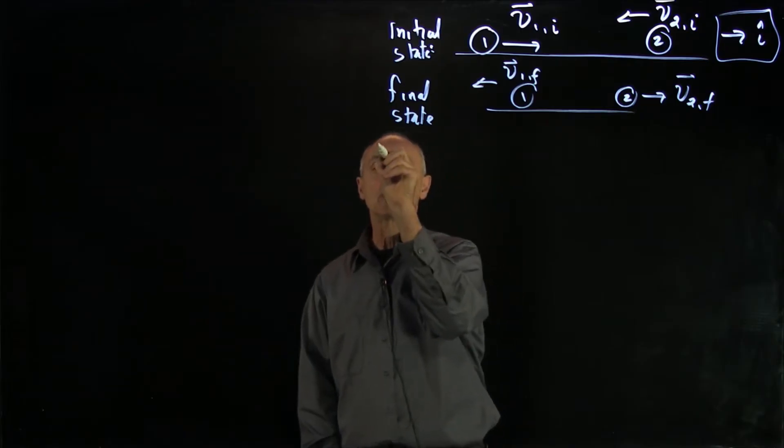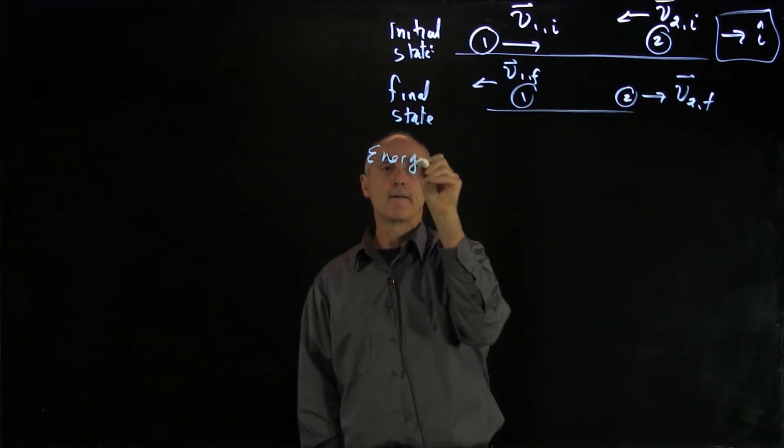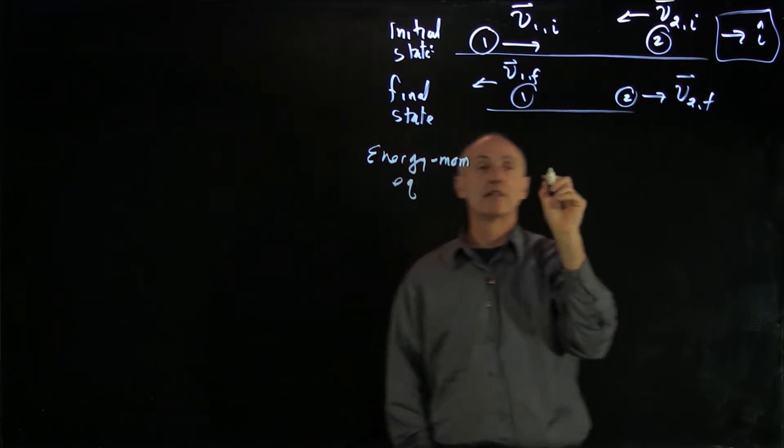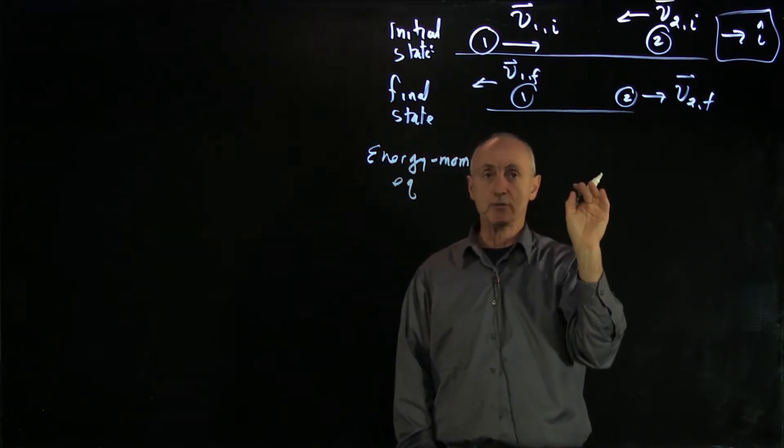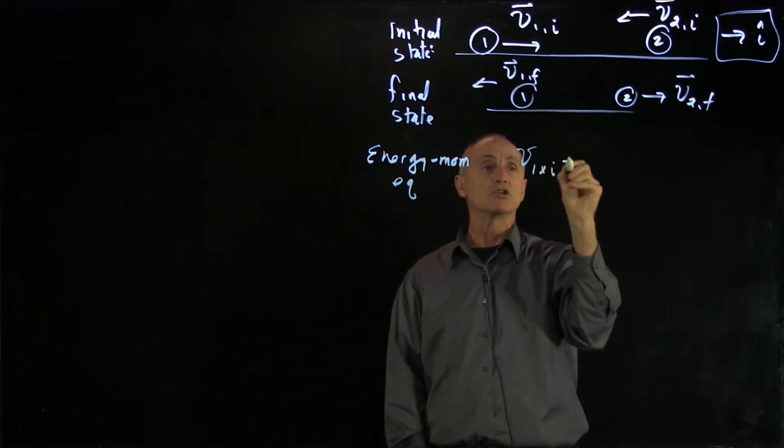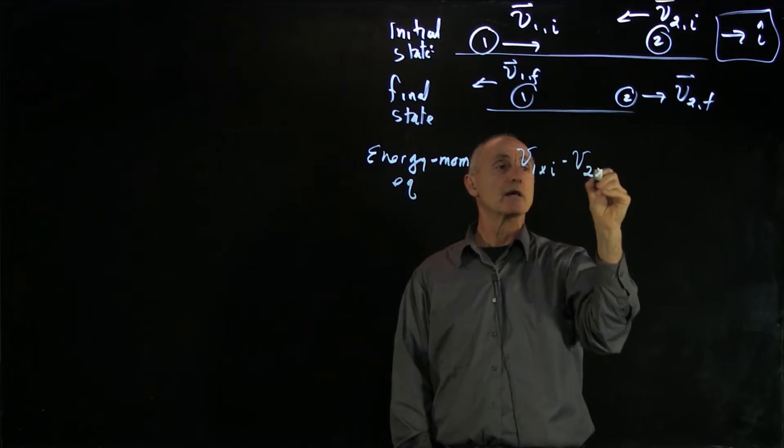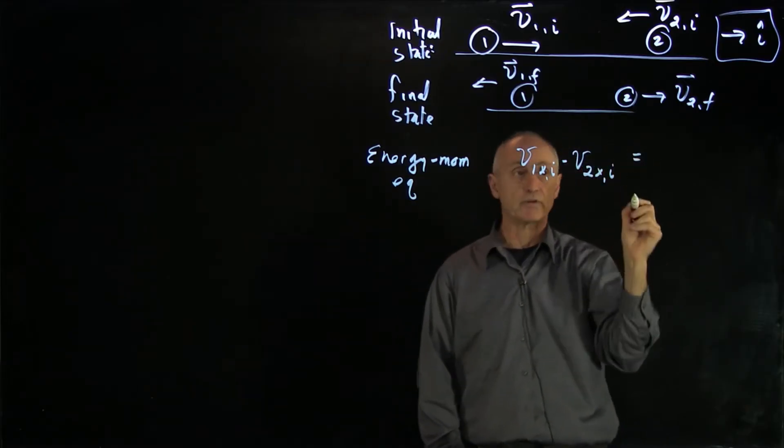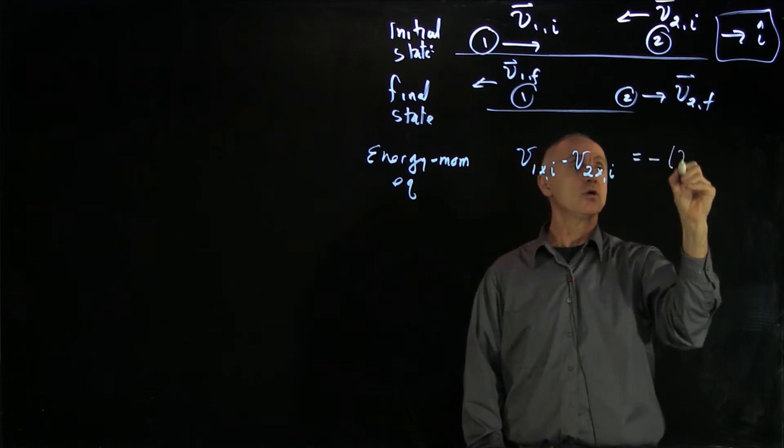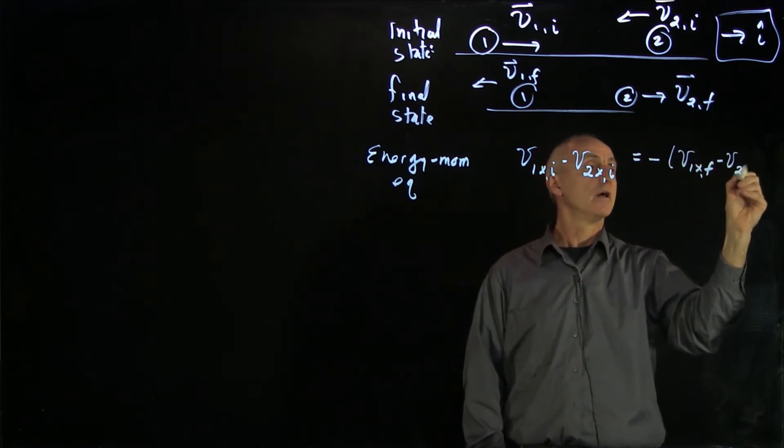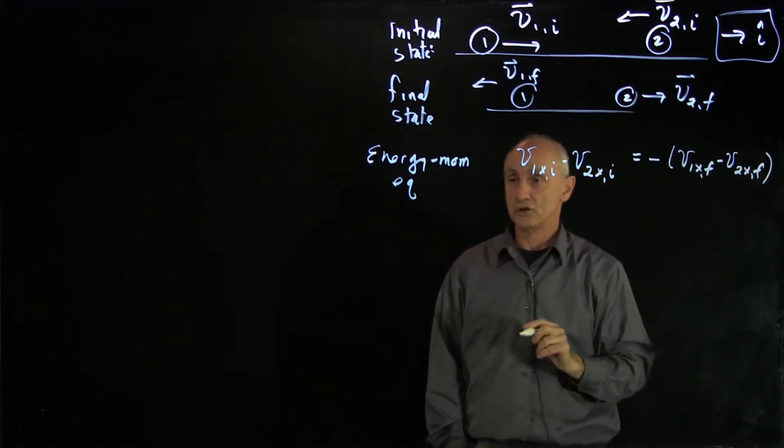Let's remind ourselves, we'll call it the energy momentum equation. It said that v relative initial was equal to v relative final. So we have v1 x initial minus v2 x initial, that's the x component of initial relative velocity, is equal to the final x component of the relative velocity. And that was our energy momentum law.